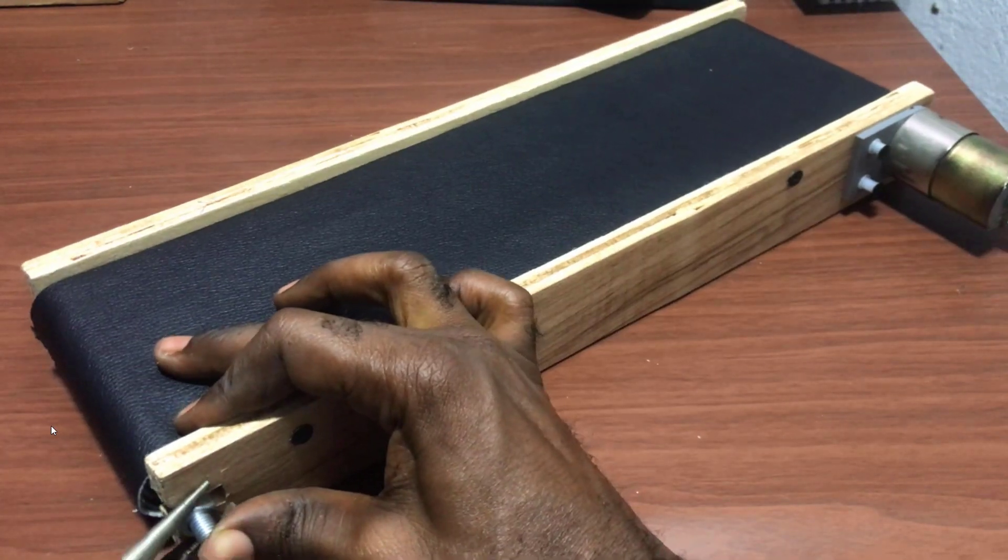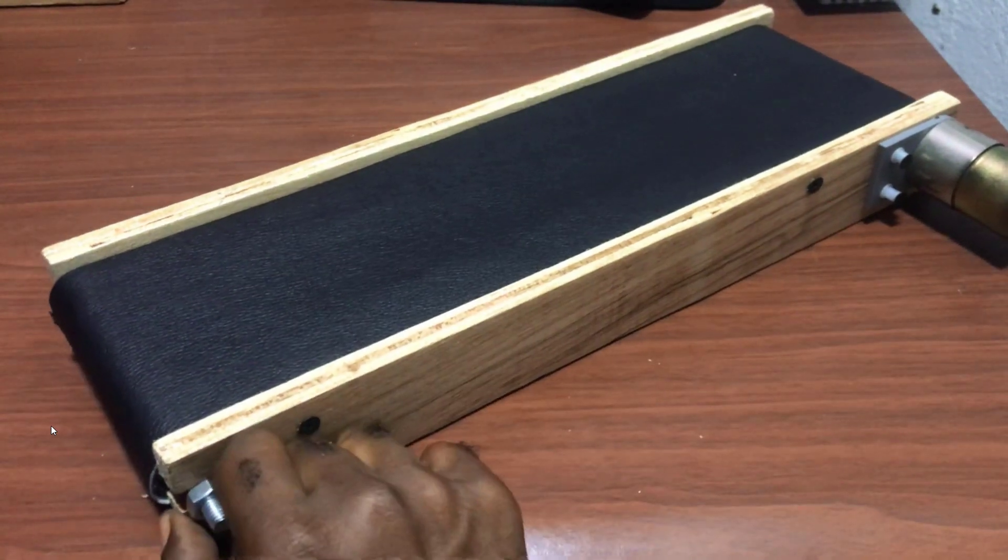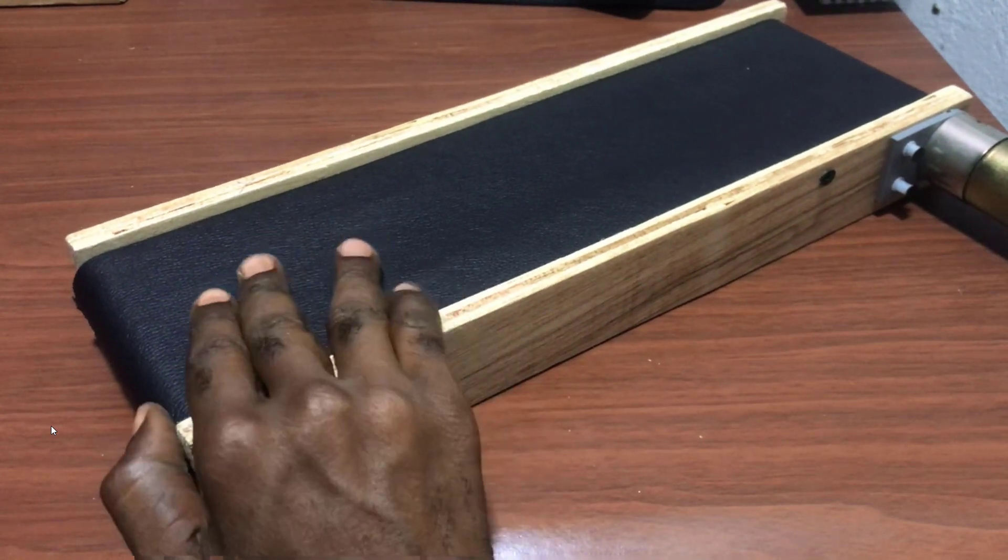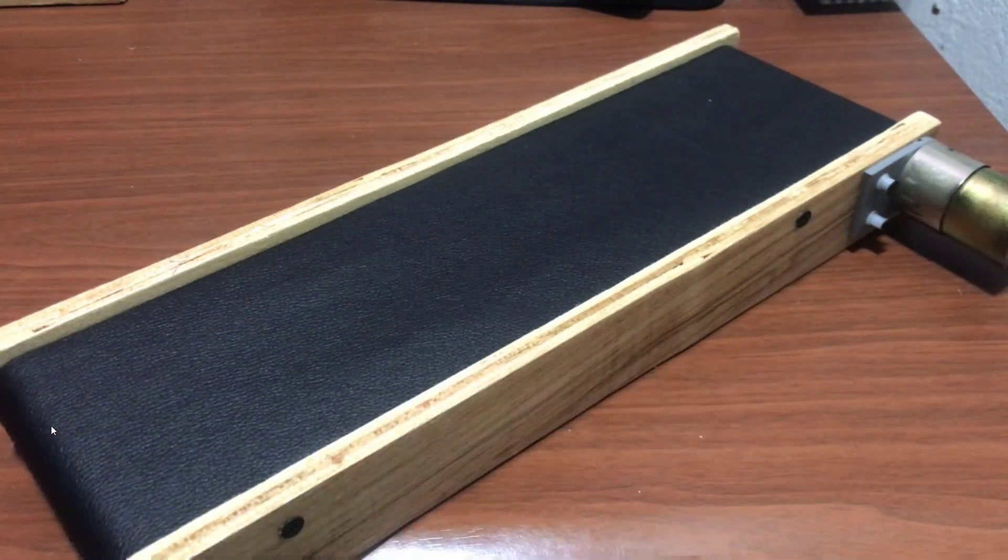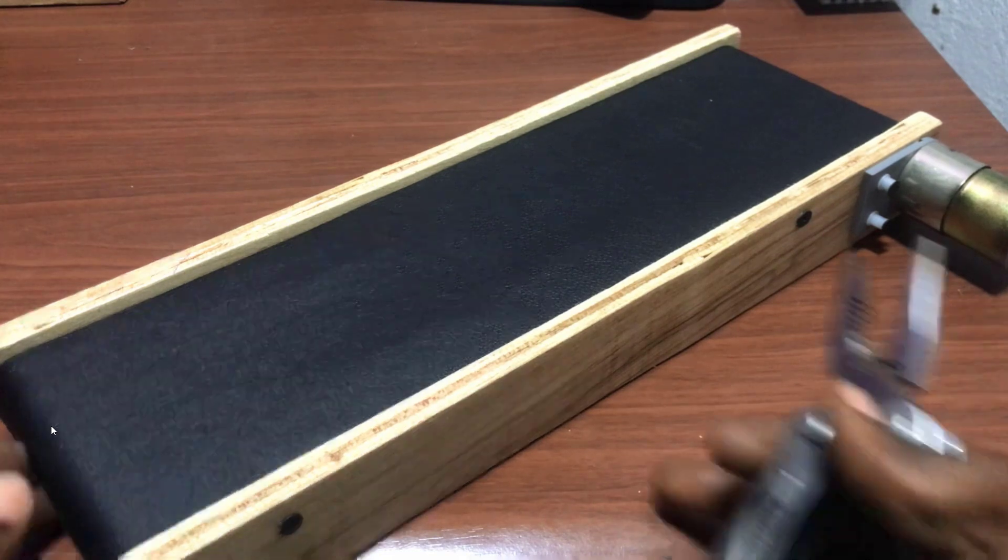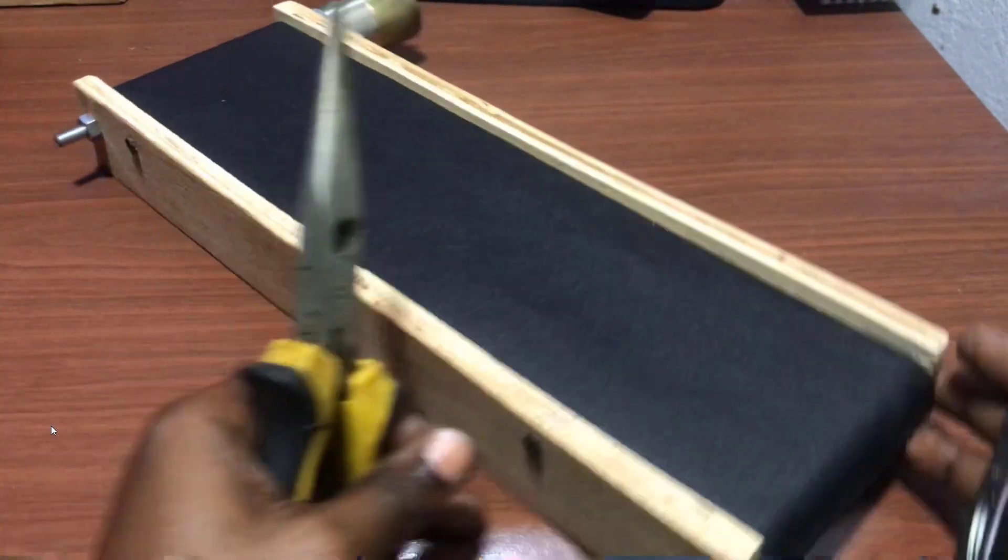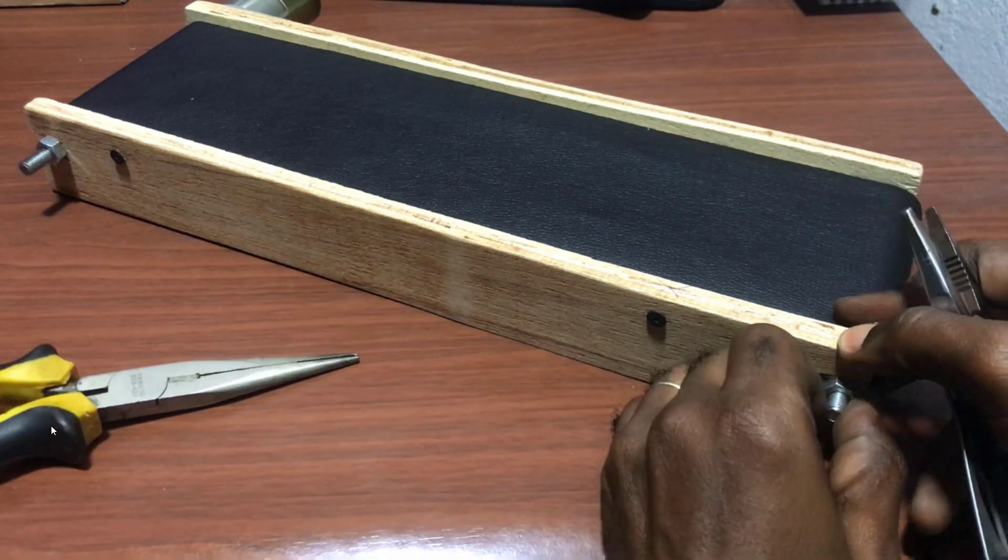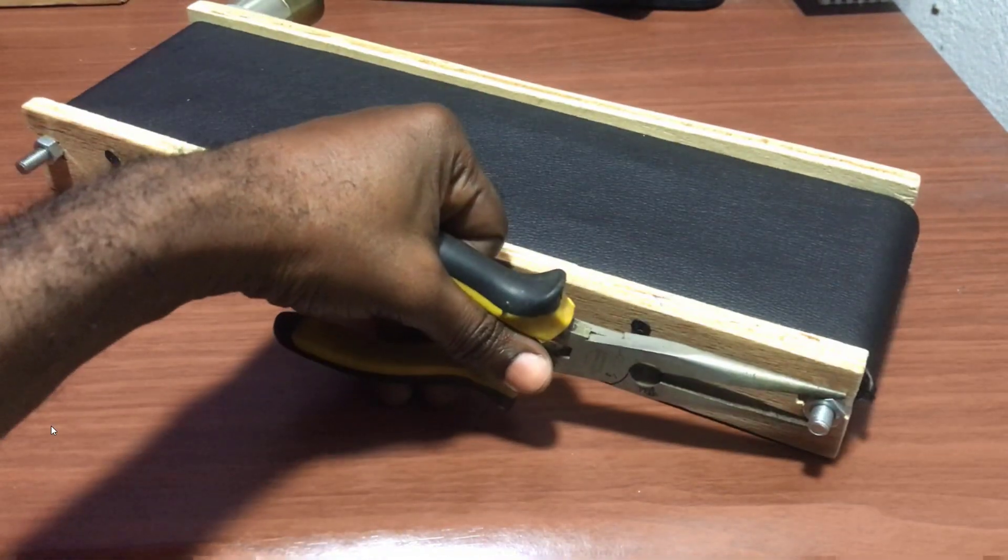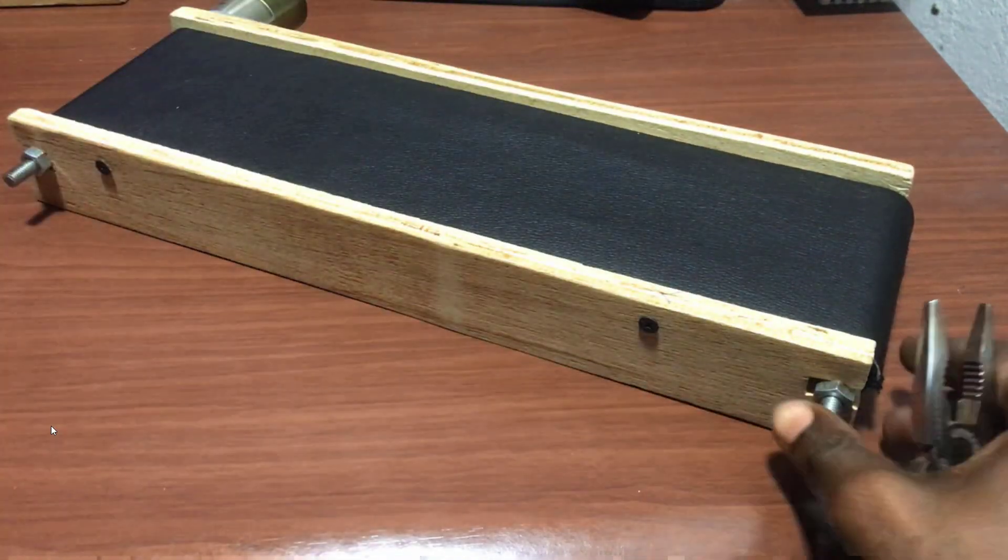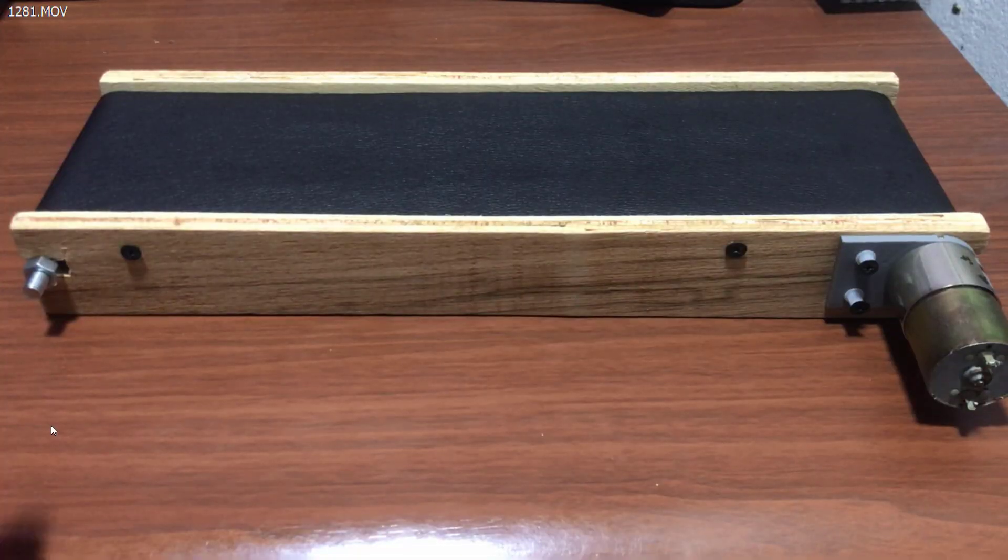So after getting the tension that you need, you need to finally tighten it up using a plier or a non-slip plier. Hold it in position and then tighten them firmly. Do the same for the other end.